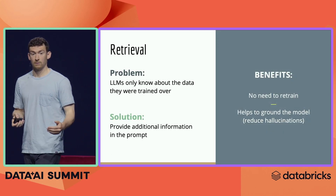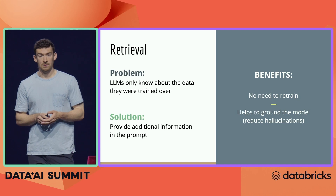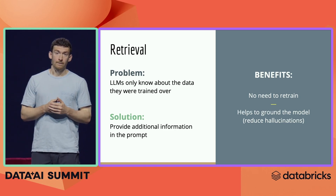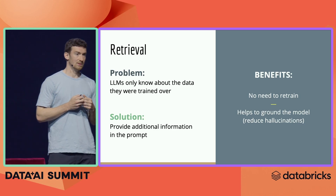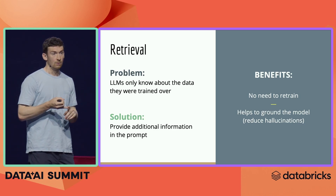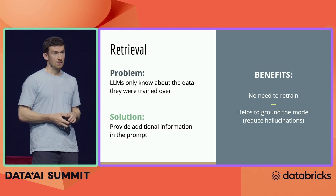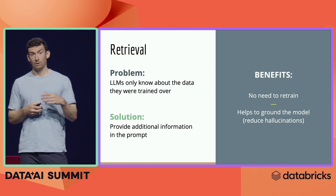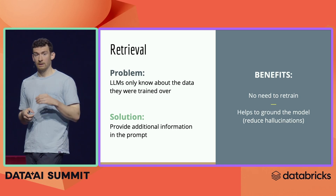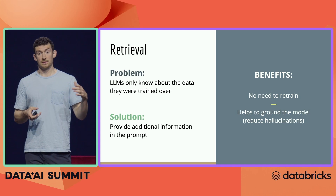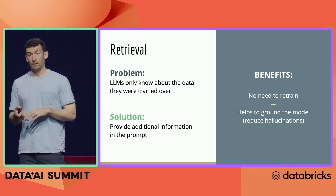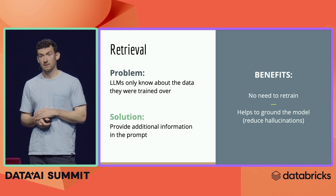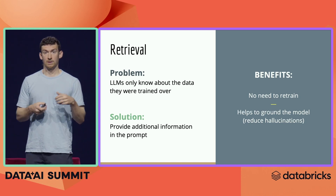The first area I want to talk about is retrieval. The problem retrieval solves is that language models like GPT only know the data they were trained on. When it comes to answering questions about recent data or your personal data, they can't do that by themselves. A popular technique is retrieval augmented generation, where you first do a retrieval step, provide that information in the prompt, and ask the language model to answer based on that data. The benefits are that you don't need to retrain a model — you can use commonly available APIs off the shelf — and it helps ground the model and reduce hallucinations.